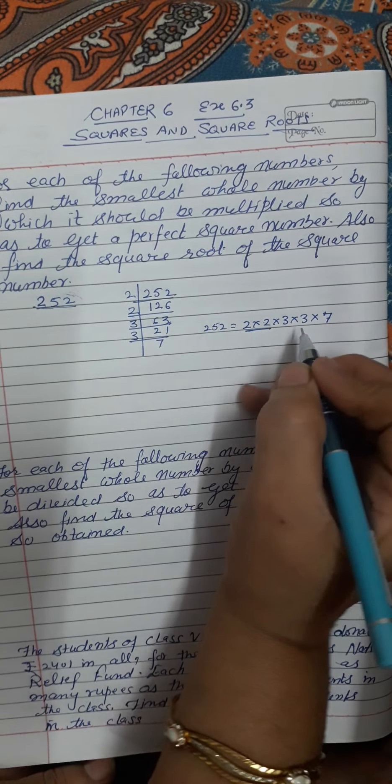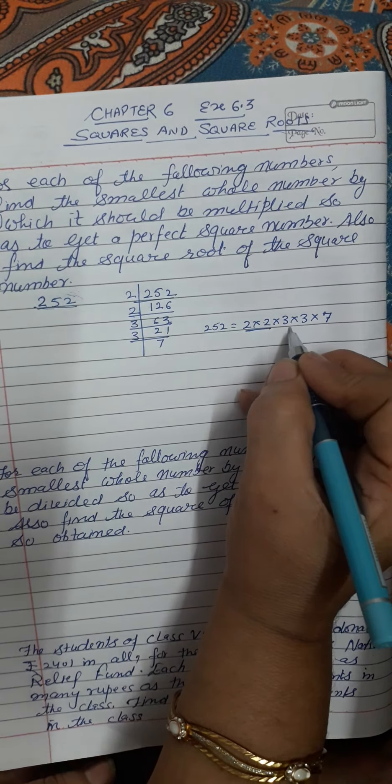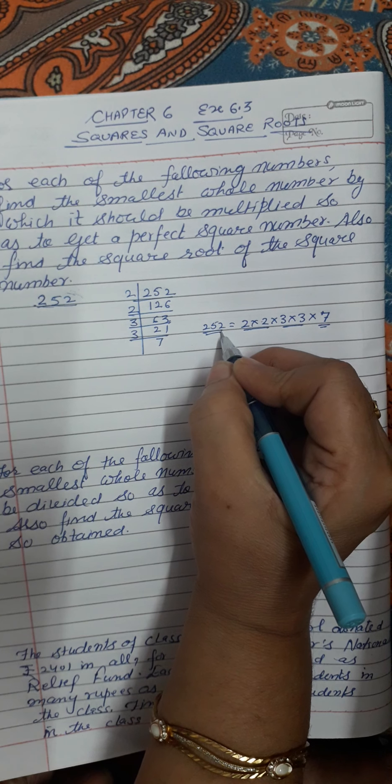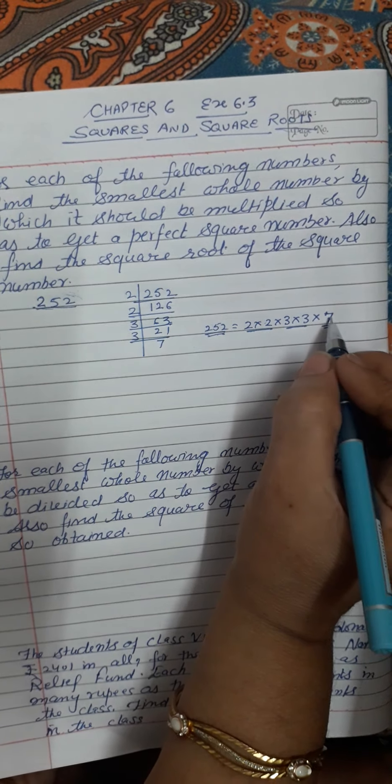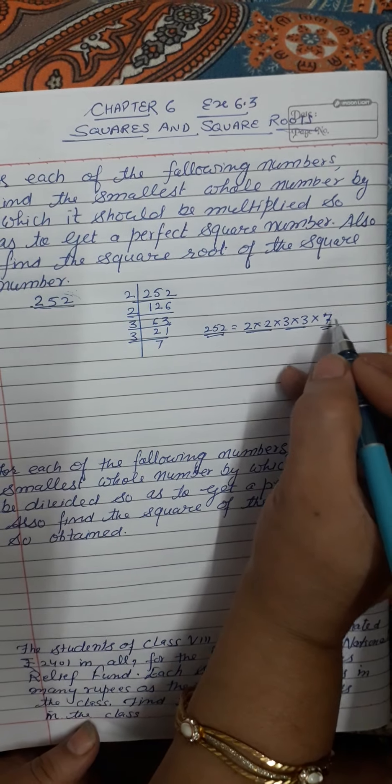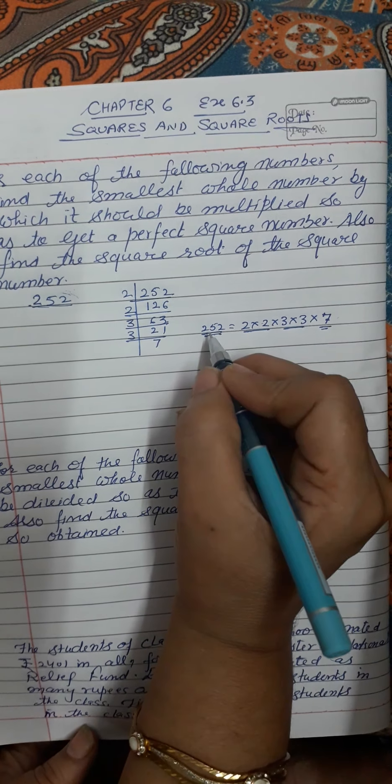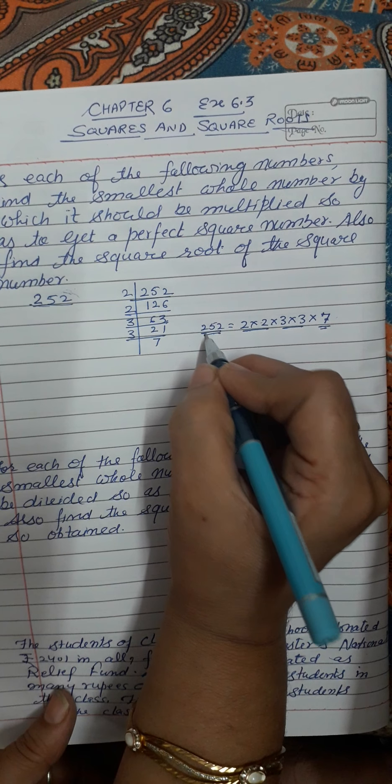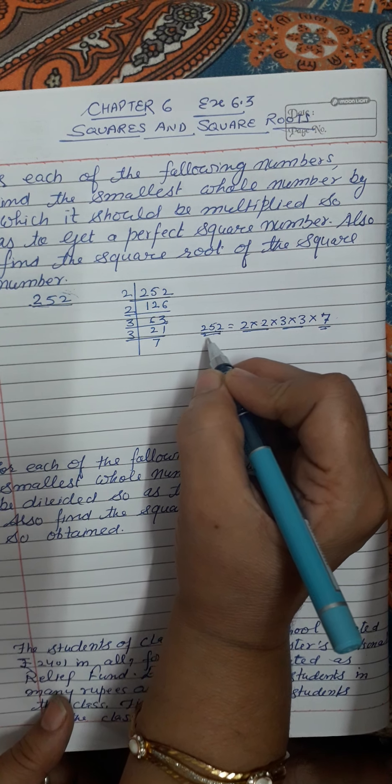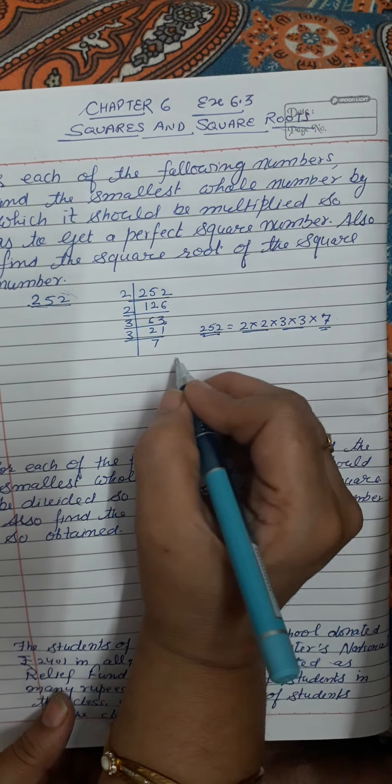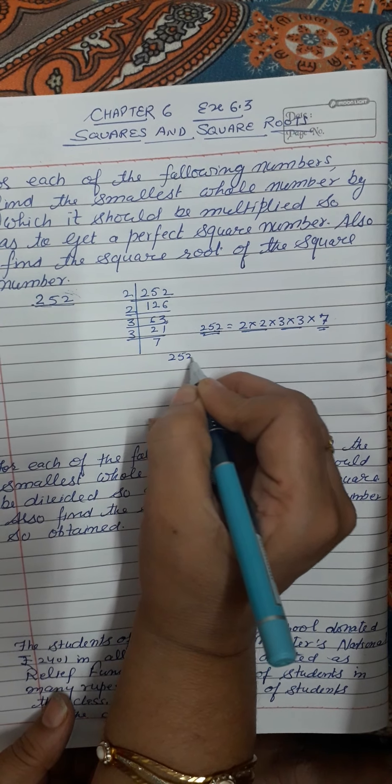Now this 2 is in pair, 3 is in pair, but 7 is not having a pair. This shows that this is not a perfect square. We need another 7, so we will multiply it with 7 on the right-hand side. So here we will know that 252, through which number we need to multiply. Let us multiply 252 by 7.